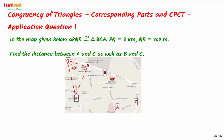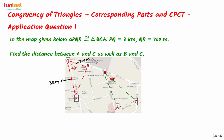Similarly, we can form triangle BCA by joining point B to point A, point A to point C, and point B to point C, so BCA is also a triangle. Now PQ is given to be 3 kilometers, and QR is given to be 700 meters.